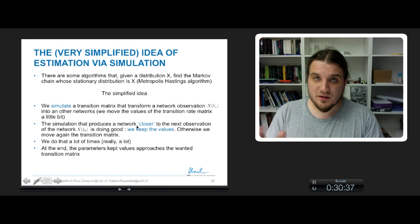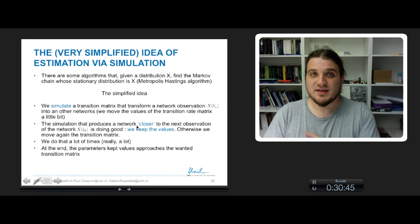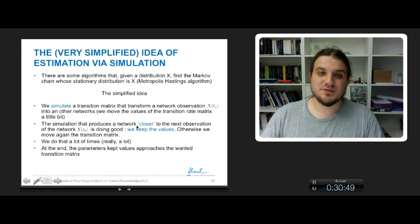So we keep the values of its parameters. Otherwise we move again the values of the matrix and we do that a lot. And at the end we kept the values that approach the best the next observation we have.